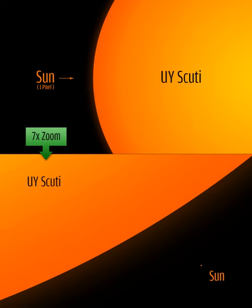See also: Angular diameter, Compact star, List of exoplanet extremes, List of extremes in the sky, Peculiar velocity, Proper motion, Radial velocity, Rotational speed, Star, Star system.